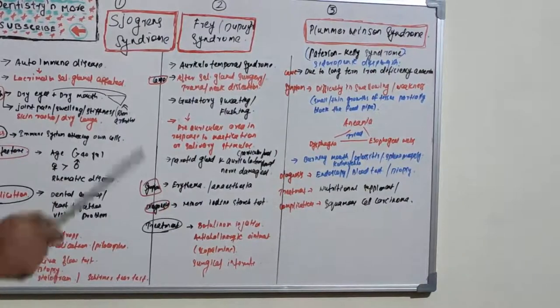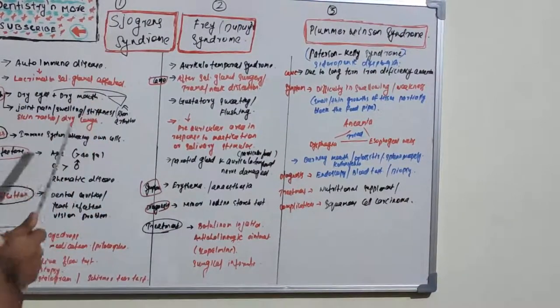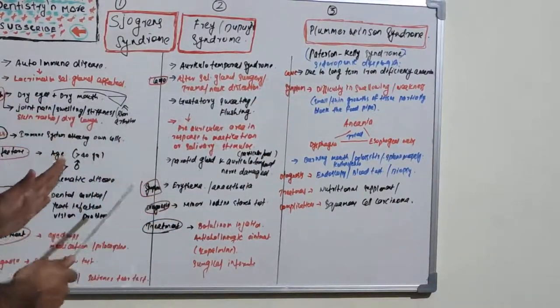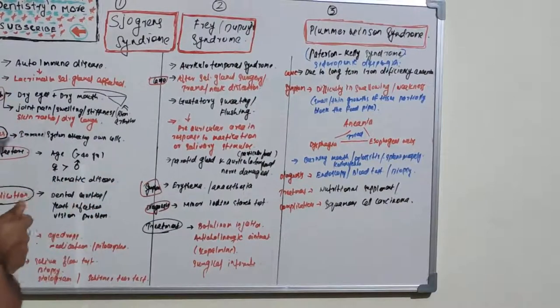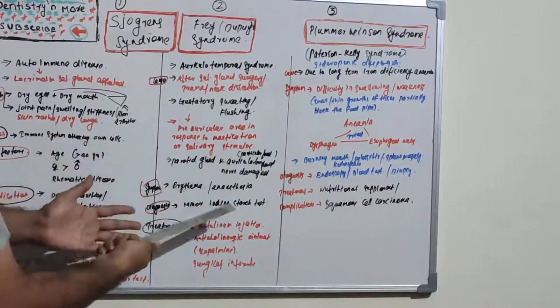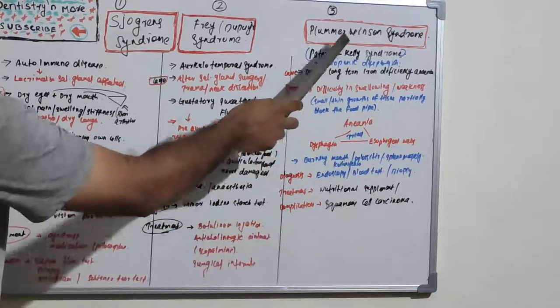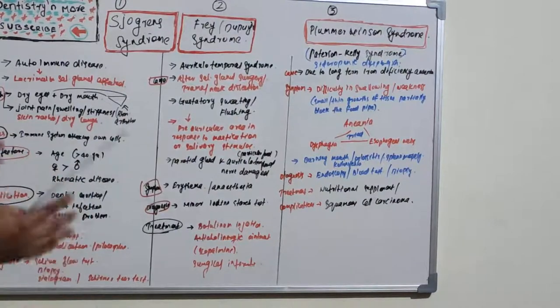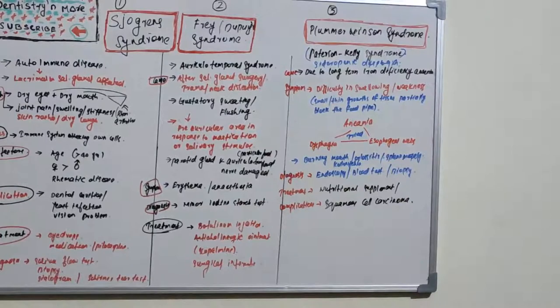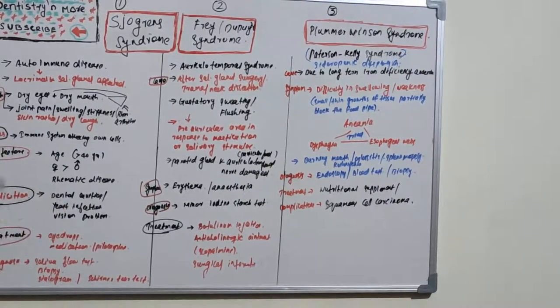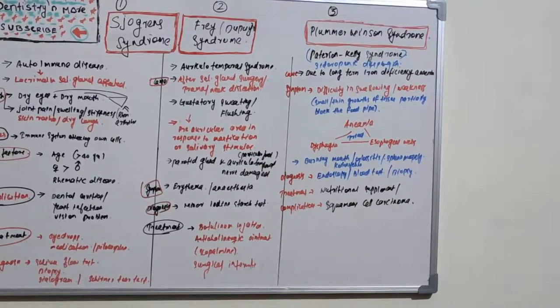So today's session was about three syndromes: Sjögren's syndrome, Frey's syndrome, and Plummer-Vinson syndrome. These two syndromes were associated with salivary glands and lacrimal glands. Sjögren's is an autoimmune disease, Frey's is a disease due to trauma to the salivary gland and auriculotemporal nerve, and Plummer-Vinson is a nutritional deficiency. These three are commonly asked questions, so whatever I put on this board is asked once or twice in the university exam. Try to understand the difference between these three. I will come up with more syndromes in my next sessions. Thank you.